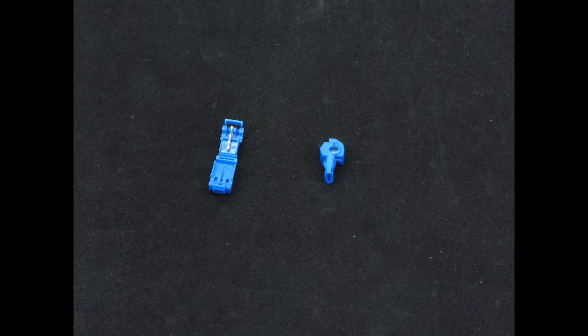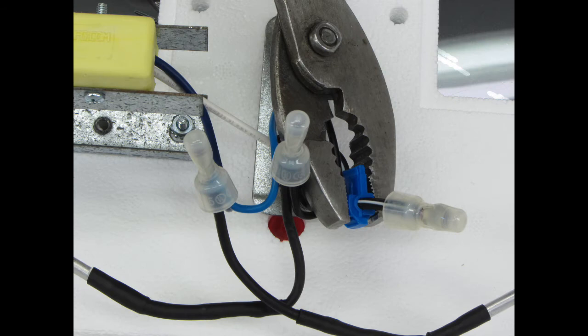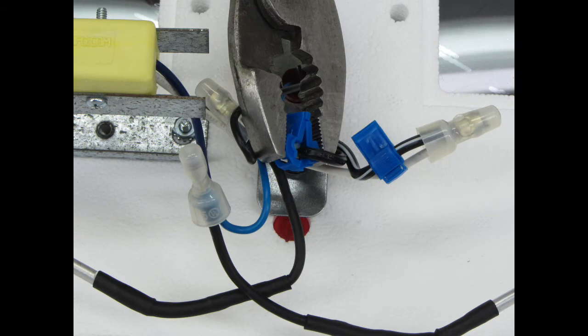Now it's time to connect the blue T-tap connectors to the main power wires. The easiest way to do this is to put them in place by hand. Once you have them where you want them, you can use your pliers to clamp them shut. This step can be the trickiest part of the install if you're not careful when lining up the T-taps. They will cut into the wires to provide power to your fan kit, so you want to get this right the first time.